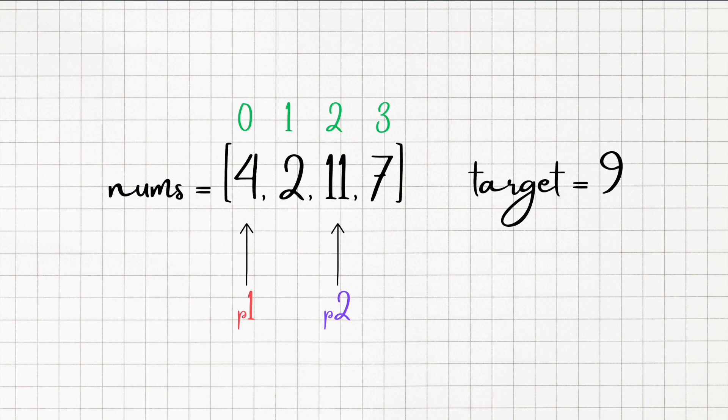Now we see that 4 plus 11 equals 15, which is again not our target value. So we move our pointer 2 to the next index. And 4 plus 7 is 11, which is again not our target value.